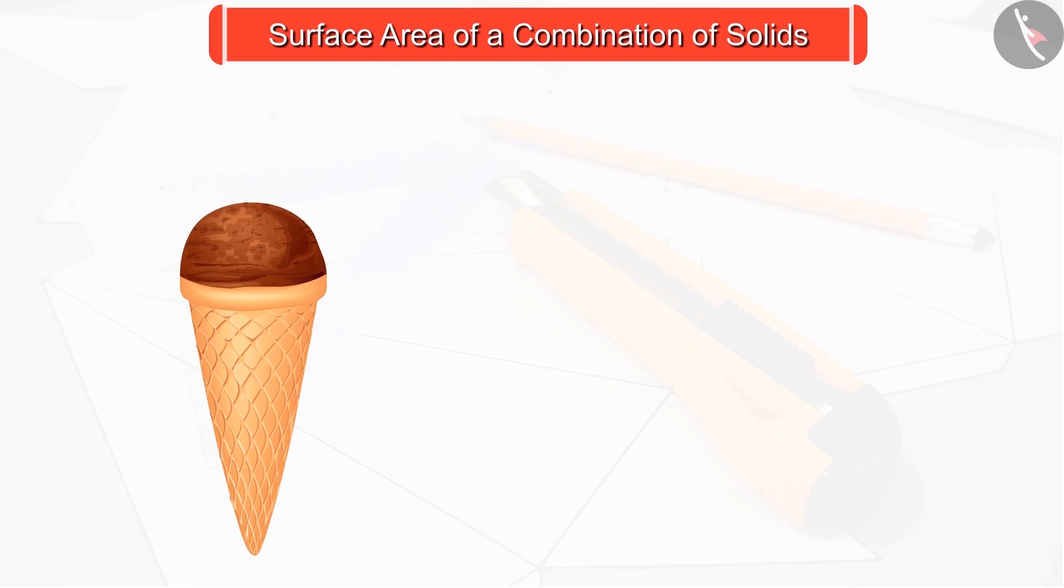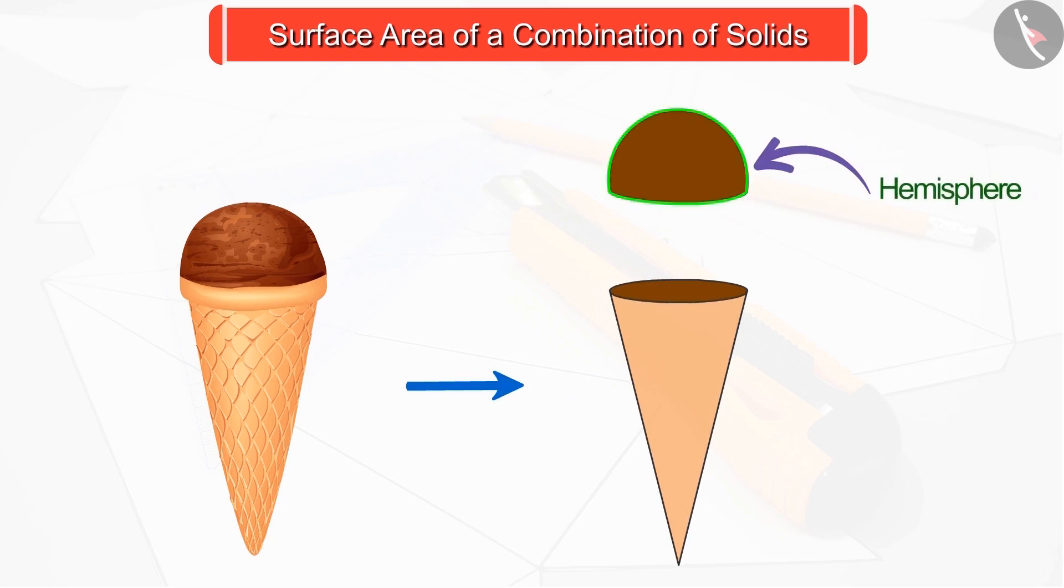Let's draw its shape. By looking at it we can see that it is formed by combining two figures, a hemisphere and a cone. The top part of the ice cream cone is a hemisphere and the bottom part is a cone.